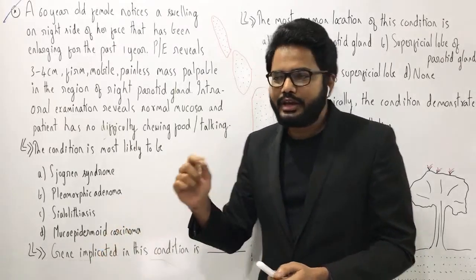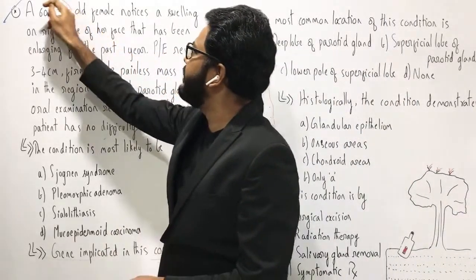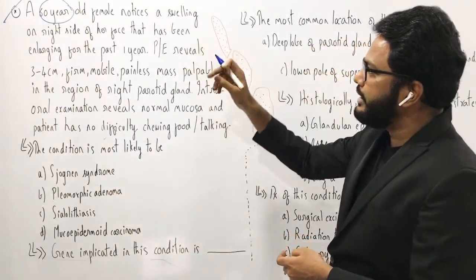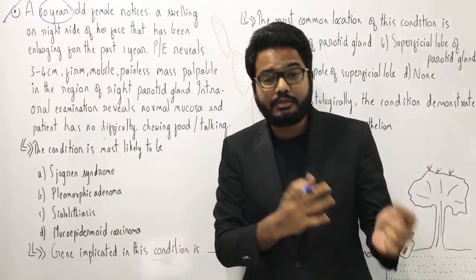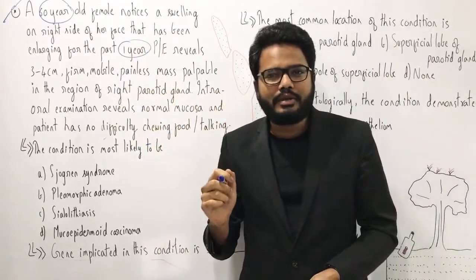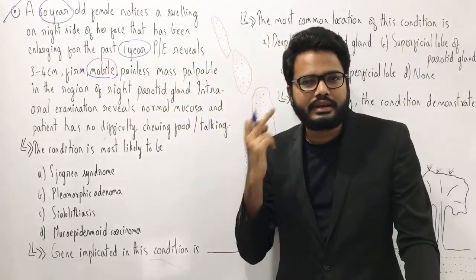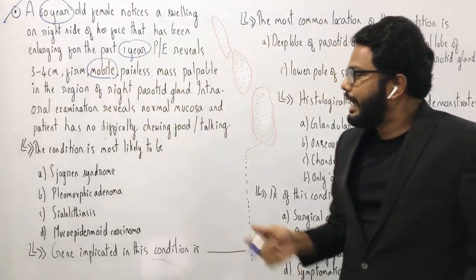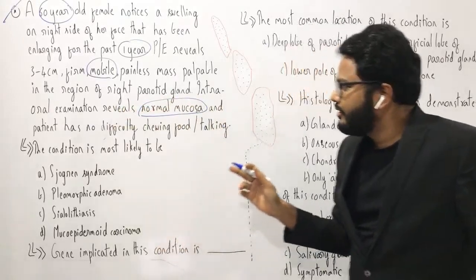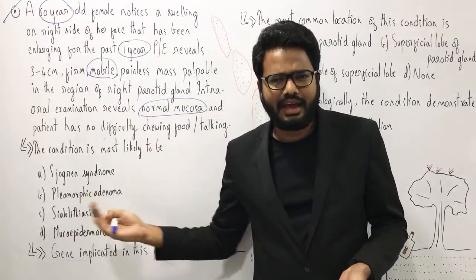Before we jump into the question, I want you to carefully observe the keywords. Age: 60 years, so comparatively old age. You can also see a swelling which is slow growing for the past one year. Physical examination reveals a firm but mobile and painless mass palpable in the region of the right parotid gland. Intraoral examination reveals normal mucosa — no signs of infection or inflammation. And the patient has no difficulty chewing or talking, which means asymptomatic.